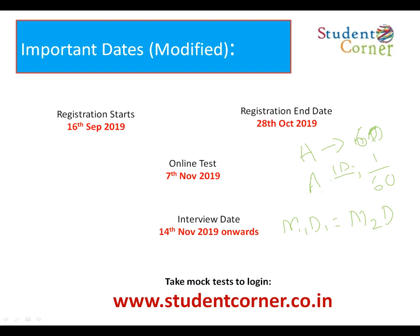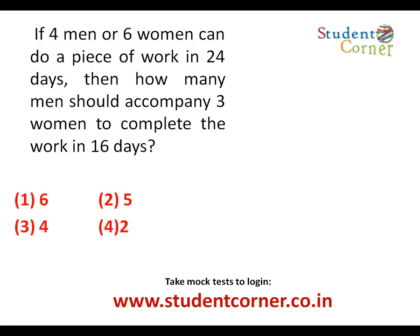The first basic question: if four men or six women can do a piece of work in 24 days. 'Or' means four men equals six women in terms of work capacity. Either four men can do it in 24 days, or six women can do it in 24 days — that is the resultant given.